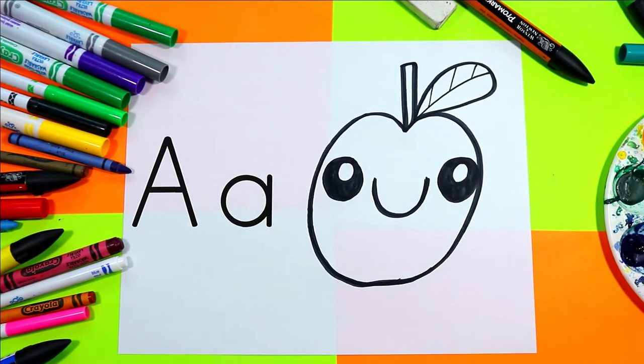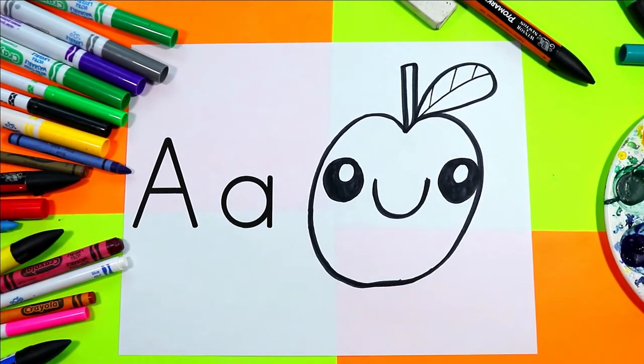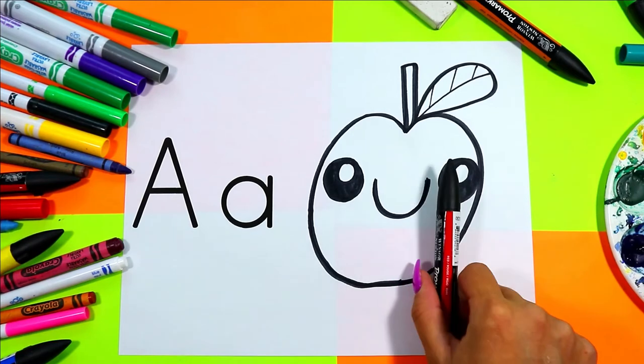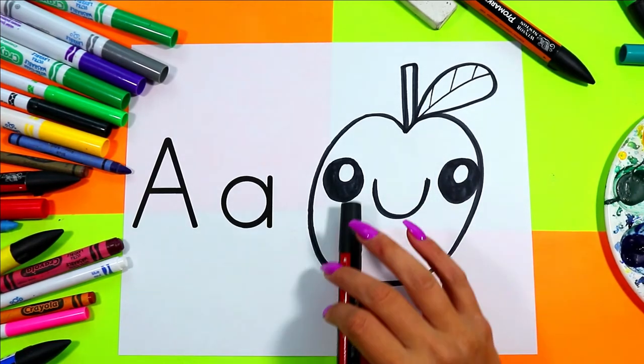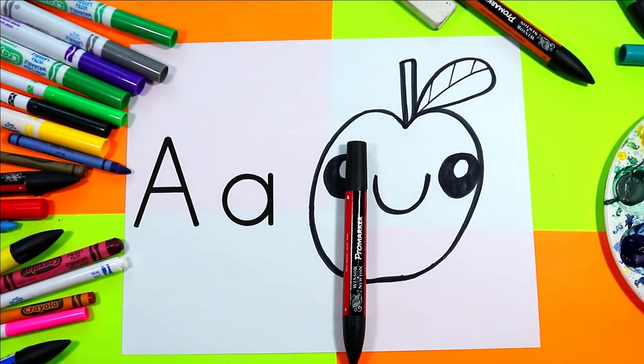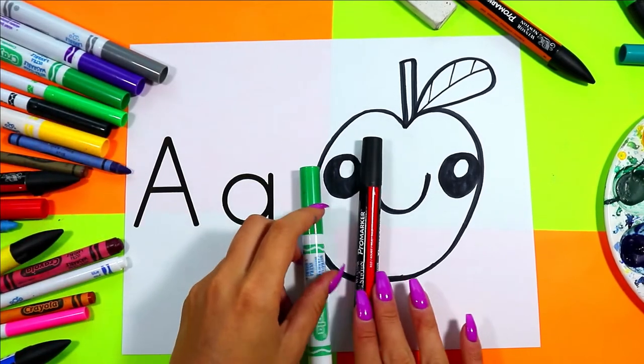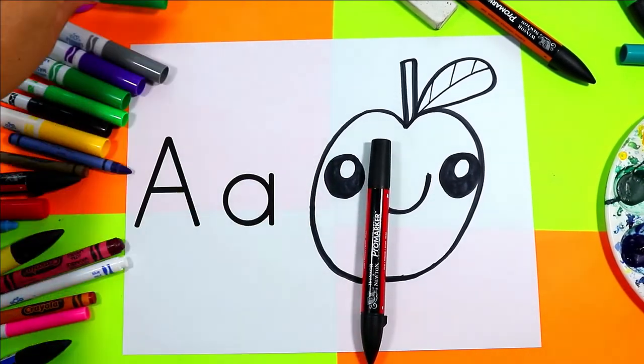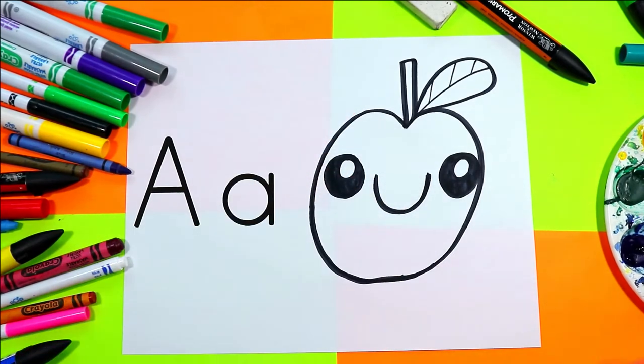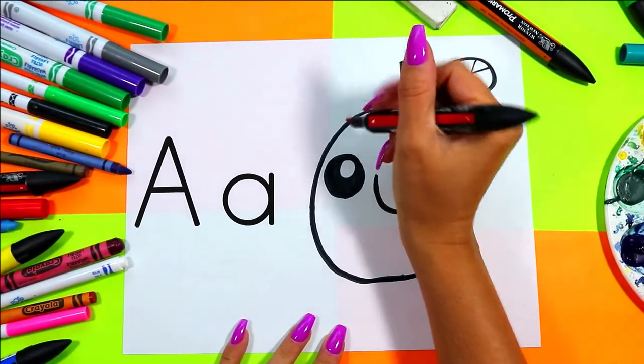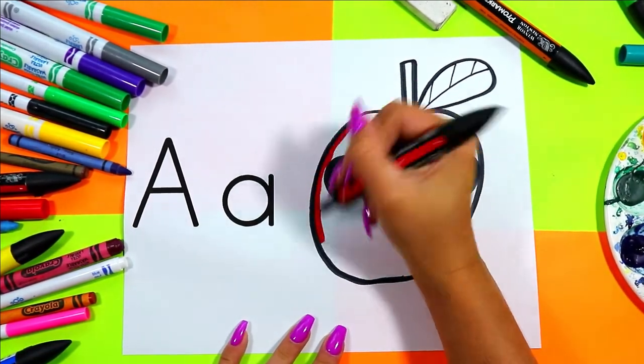A for apple. Once our apple is all drawn, we can pick a beautiful apple color to color our apple with. Apples come in lots of colors - you might see some red apples, but you also might see some green apples. You can pick whatever kind of apple color you would like to color in your beautiful apple.